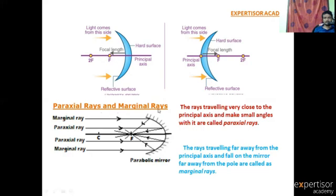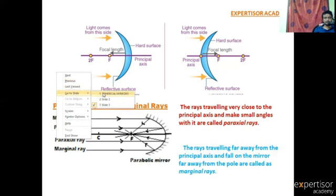Next, Paraxial Rays and Marginal Rays. Some light rays coming from a long distance are focused on the mirror and after reflection, the reflected light rays group at one point — the focus point. The rays travelling very close to the principal axis and making small angles with it are called paraxial rays. The rays travelling far away from the principal axis and falling on the mirror far away from the pole are called marginal rays.